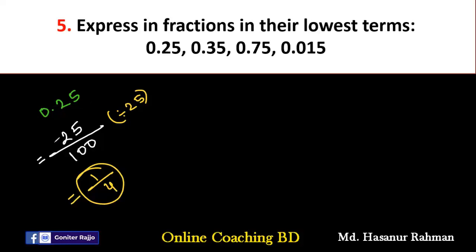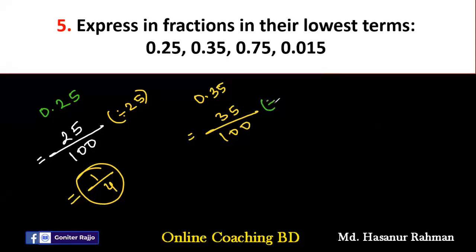We are converting the decimal into a fraction, then the fraction into its lowest term. Now, 0.35 — that means we divide 35 by 100. We can divide numerator and denominator by 5, because the unit digits of both numbers are 5 or 0, meaning both are divisible by 5. So, 35 by 5 is 7, and 100 by 5 is 20. Therefore, 0.35 equals 7 by 20.